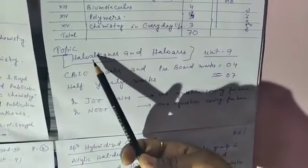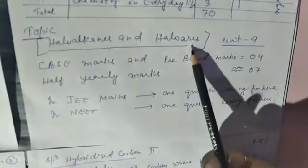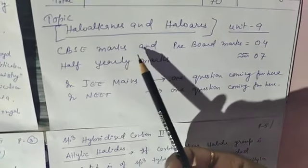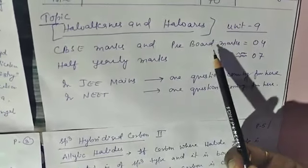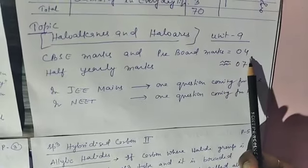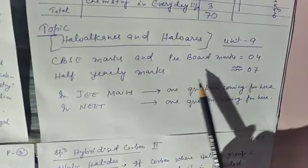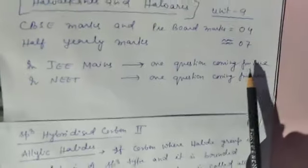The chapter I am going to start today is Unit 9: Haloalkanes and Haloarenes. In the CBSE board exam and pre-board, this chapter carries 4 marks. In the half-yearly exam, 7 marks are given for this chapter. One question also comes from this chapter in AIIMS and in NEET as well.